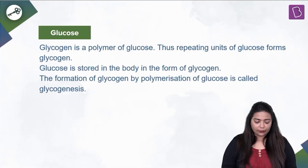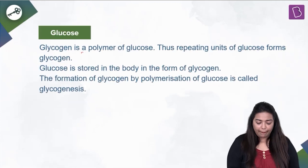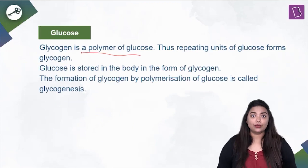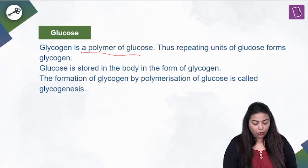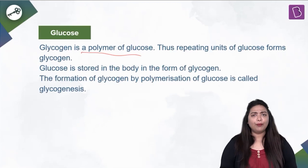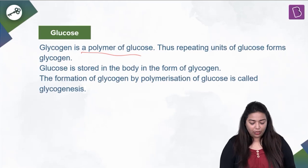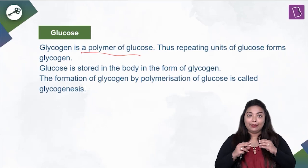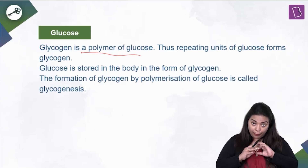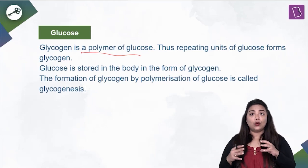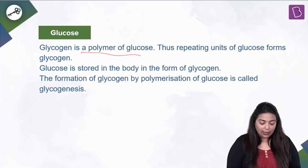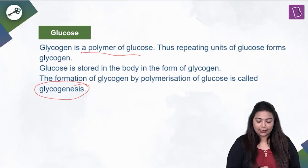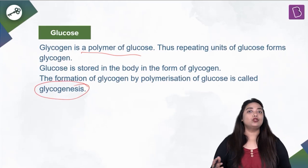To sum up: glycogen is a polymer of glucose. The repeating unit of glucose forms glycogen, and glucose is stored in the body in the form of glycogen. The process where glucose units are linked together to form glycogen is called glycogenesis.